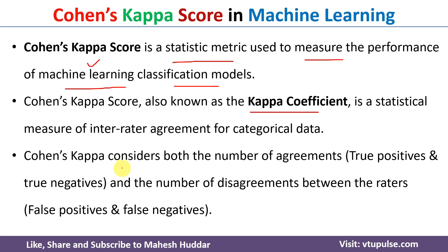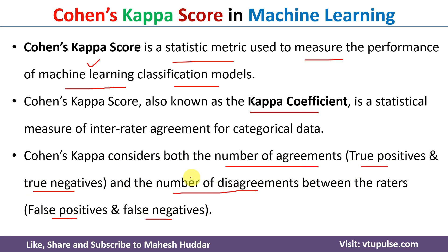Cohen's kappa score considers both the number of agreements as well as the number of disagreements. Agreements means true positive and true negative. Disagreements means false positive and false negative. It considers both of these to calculate the kappa score.